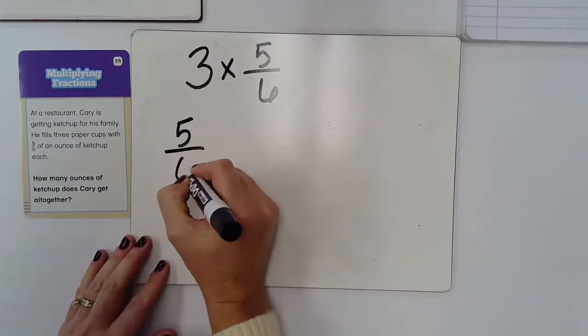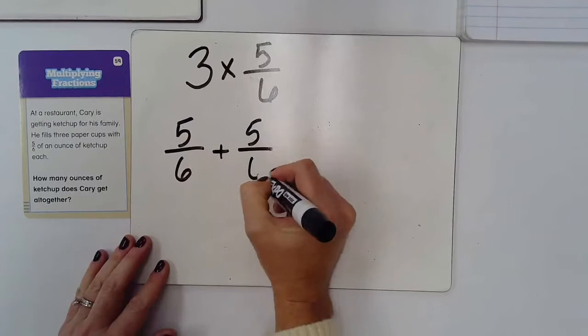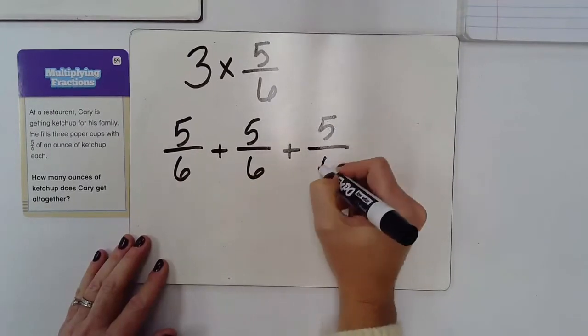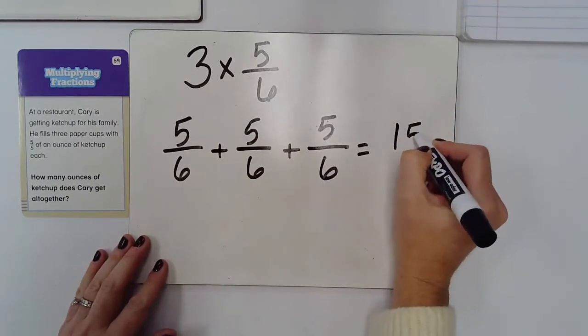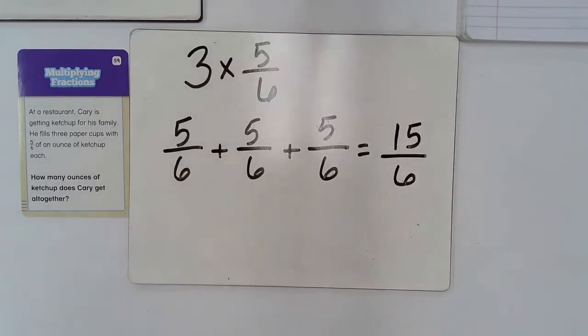So I could say five-sixths plus five-sixths plus five-sixths, which gives us fifteen-sixths.